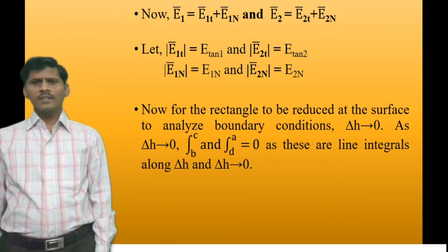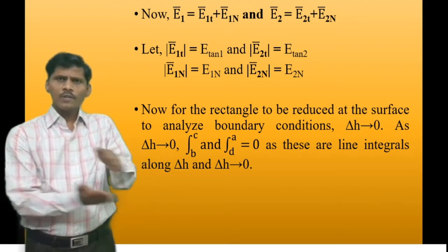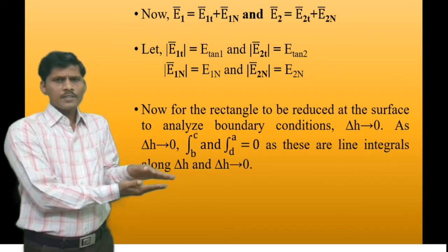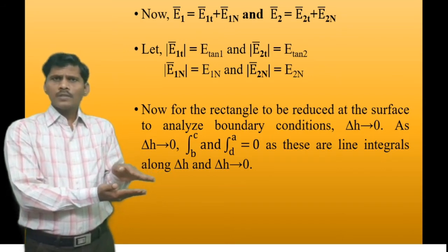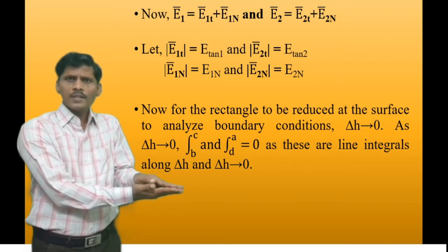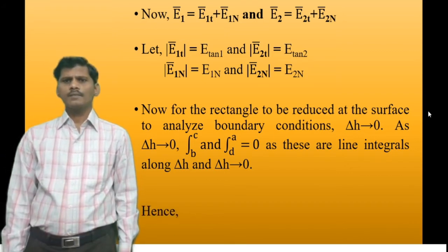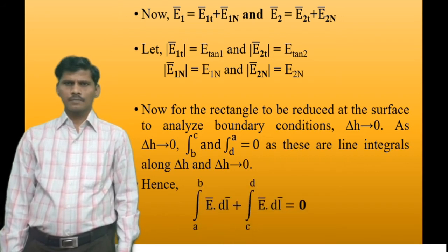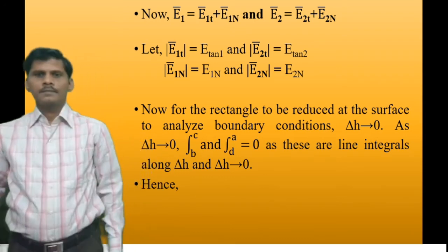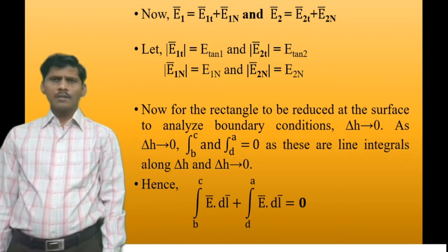Now, as the rectangle is reduced — that is, as delta-H tends to 0 — the height of the rectangle decreases. The path integrals along the vertical sides (B to C and D to A) become 0. Therefore, only the integrals along A to B and C to D remain, and their sum equals 0.